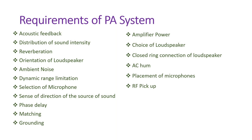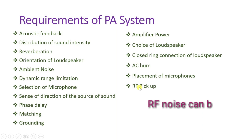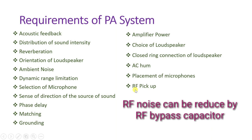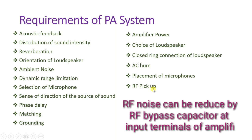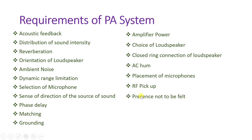RF pickup is another issue. RF pickup happens because of poor grounding, and RF noise may generate unwanted sound in the loudspeaker. RF noise can be reduced by connecting an RF bypass capacitor at the amplifier. Typically an RF bypass capacitor is connected on the amplifier side to remove RF noise. Also, the presence of the PA system feed should be properly managed to prevent unwanted feedback.